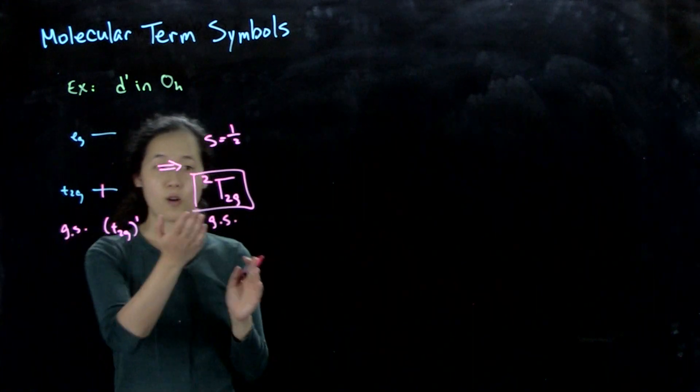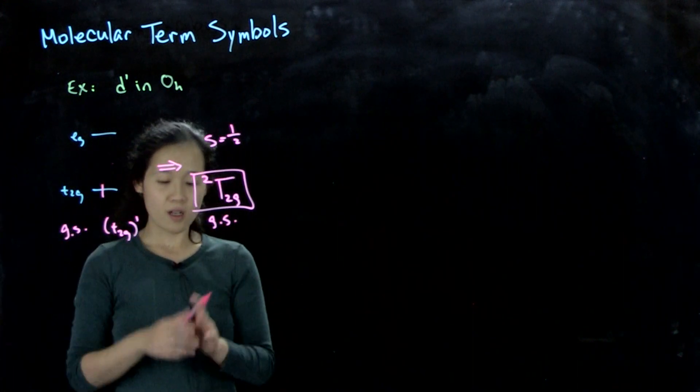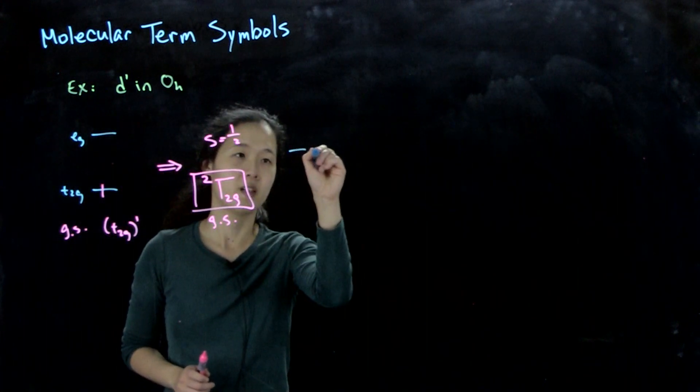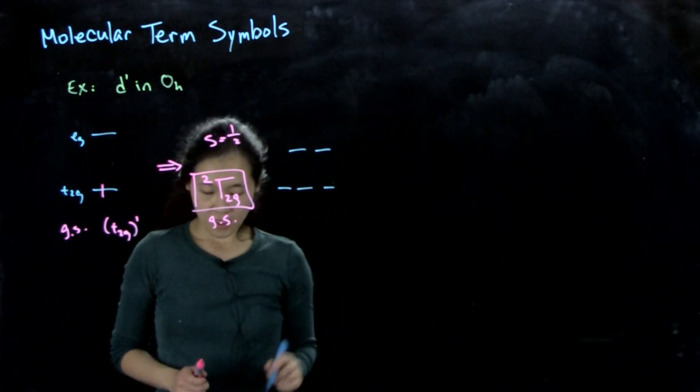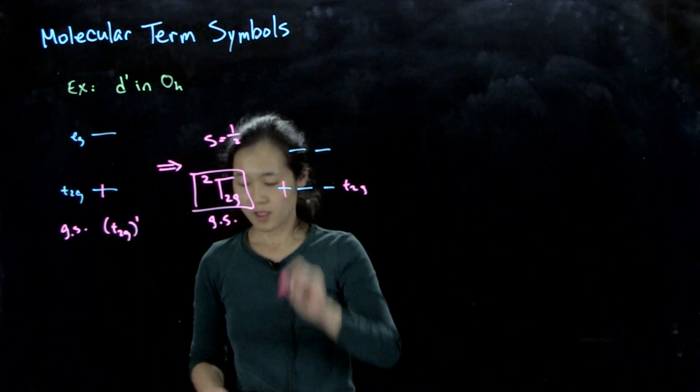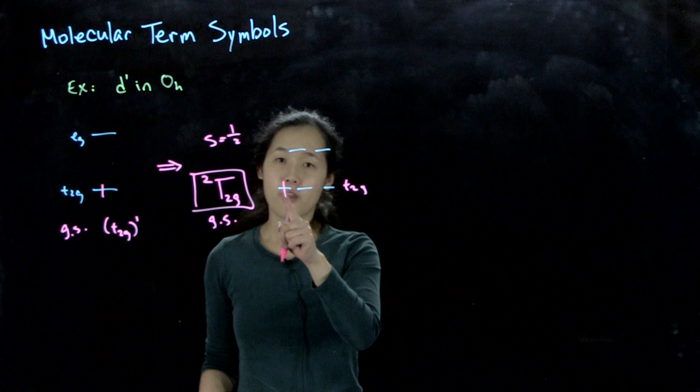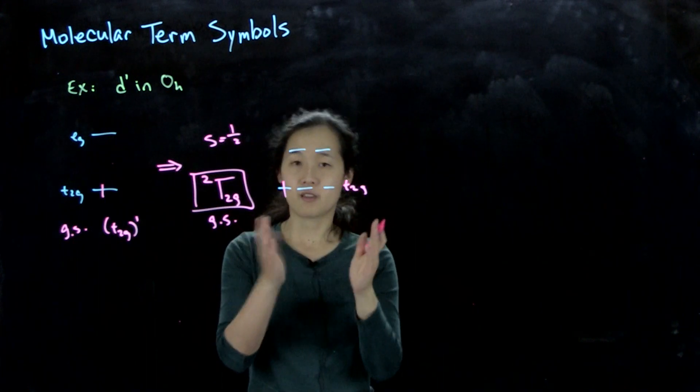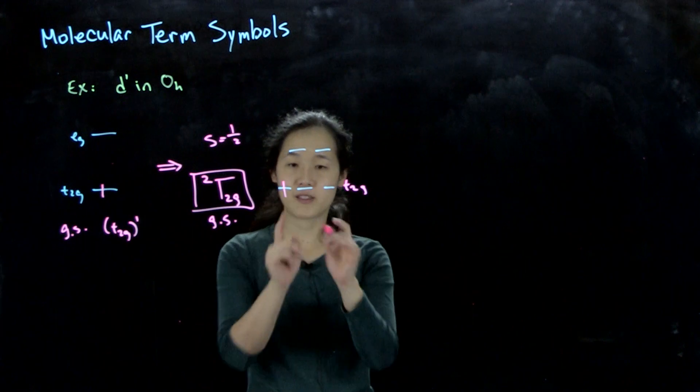And you can confirm that this is all the possibilities because we know our t2g orbital. So here's eg t2g, and then we are filling in our t2g 1 electron. So this electron can go in three different orbitals, but it could be spin up or spin down, and those should be all the same energy. So that's six different boxes, so we should have six microstates.